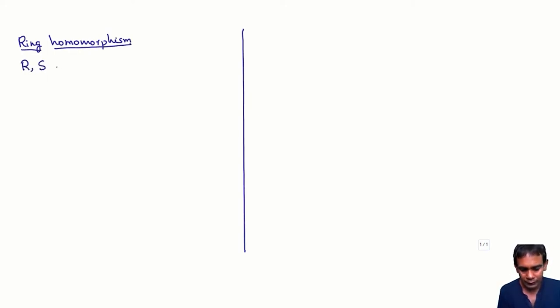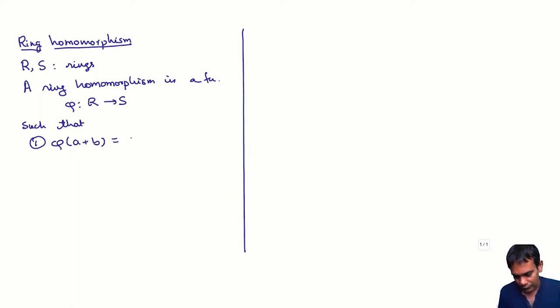Suppose you have two rings R and S. Then a ring homomorphism is a function phi from R to S, which basically preserves all the structures that are involved in the definition of a ring. Namely, it preserves addition and multiplication. So firstly, we assume that phi of A plus B is phi of A plus phi of B for all A, B in R.